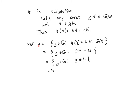The kernel is the set of elements mapped to the identity. Phi of g sends g to its coset, and the identity in the quotient group G/N is the coset N. So we're looking for all g such that gN equals N. By properties of cosets, gN equals N if and only if g is an element of N. Since N is a subgroup, this set is N itself. So this is the canonical projection and its main property.